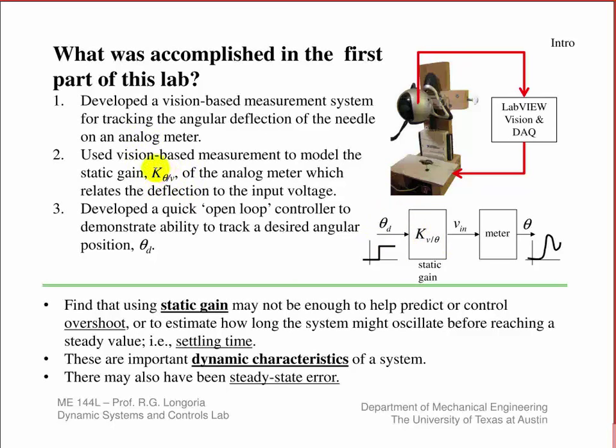What you did was you took that static gain that you measured and just invert that and use that to say, hey, if I want this angle, then this is the voltage I need into my meter. And then the idea is that you would get the position that you want.